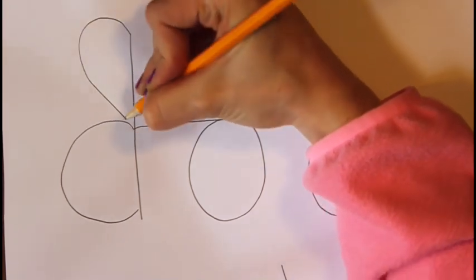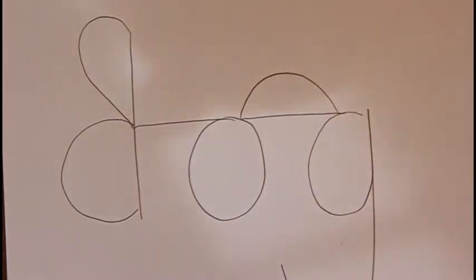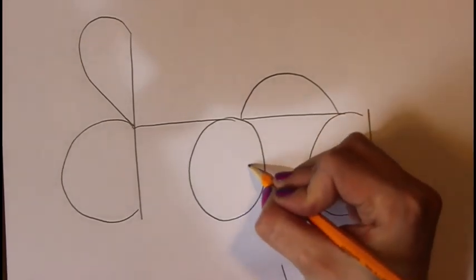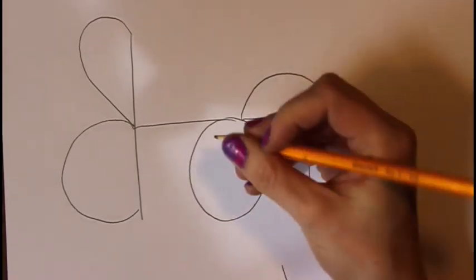We're going to go up, curve around, back down to the middle. Okay. Our next step, we're going to draw a circle right here, and we're going to draw a circle right here.